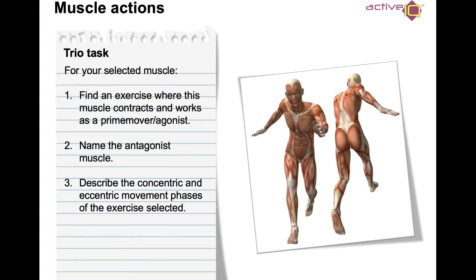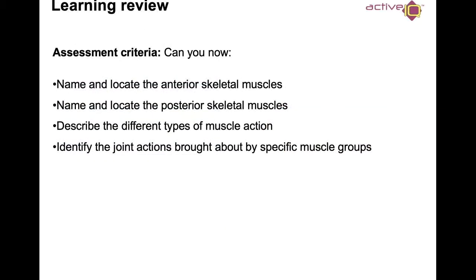What I want you to do is select some muscles and practice yourself. Find an exercise where a muscle contracts as a prime mover and agonist, name that agonist muscle, and describe the concentric and eccentric movement phases. Practice with various muscles — we've given you an idea with the biceps and triceps, now figure out some other muscles and how they work. This has been a short overview for Part 2 of the Muscular System, covering anterior and posterior skeletal muscles, types of muscle actions, and joint actions. I'm Ben — thank you for joining me, and I will speak to you shortly in Part 5.